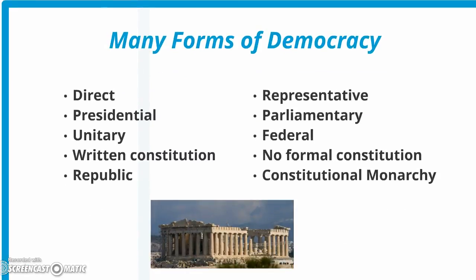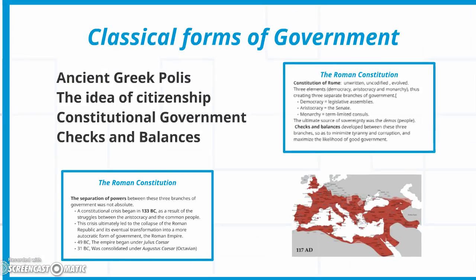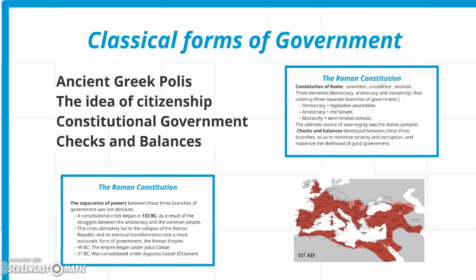There are many forms of democracy. Direct democracy was practiced in ancient classical Athens. Presidential democracy is what we have here in the United States. There's also unitary democracy versus federal, written constitution versus no formal constitution, and a republic versus a constitutional monarchy. In Great Britain they have a constitutional monarchy; in the United States we have a federal republic. The idea of democracy originally came from classical Greece in Athens — the idea of direct democracy — and this is where we get our inspiration for democracy.